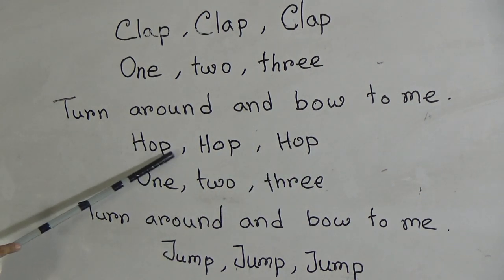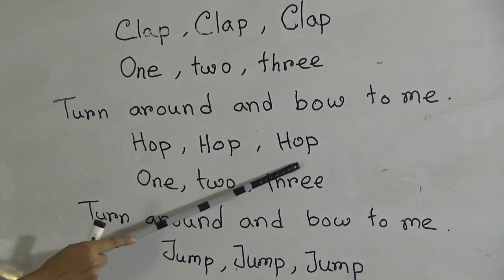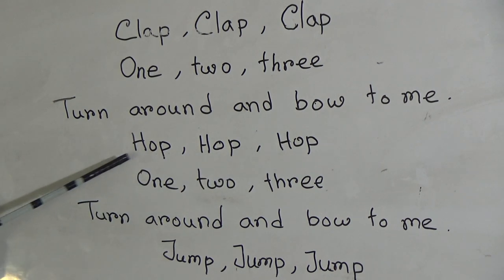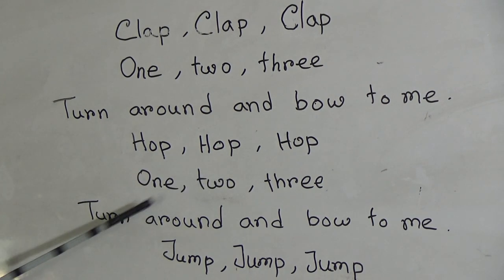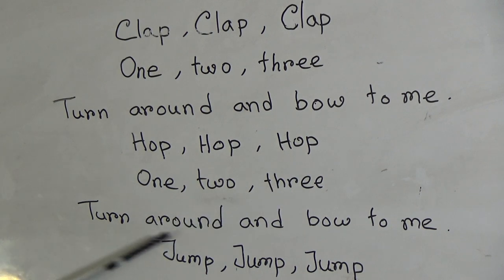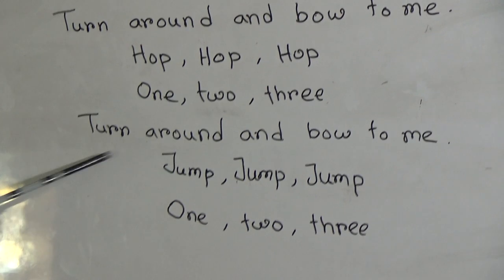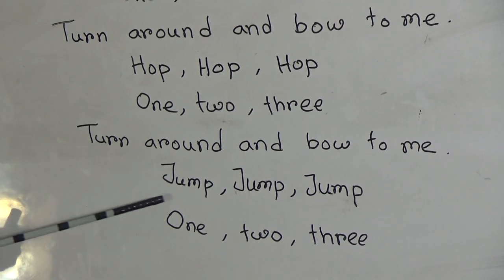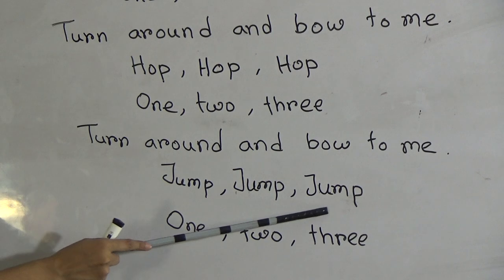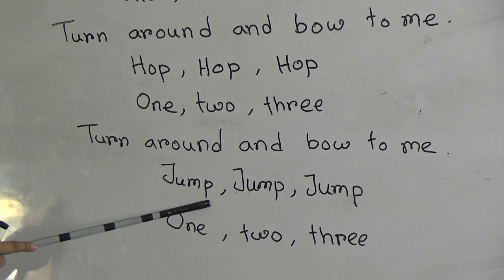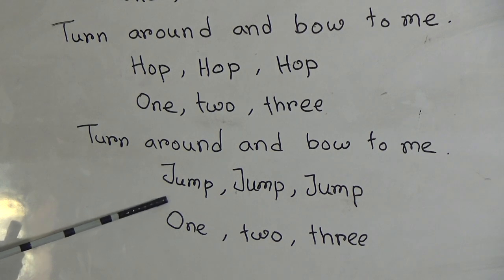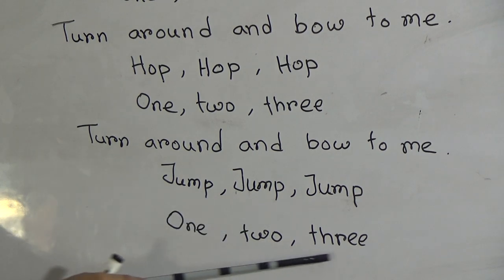Then: Hop, Hop, Hop. The spelling of Hop is H-O-P. Hop, Hop, Hop — 1, 2, 3 — turn around and bow to me. The spellings are the same. Then: Jump, Jump, Jump. The spelling of Jump is J-U-M-P. Jump, Jump, Jump — 1, 2, 3.